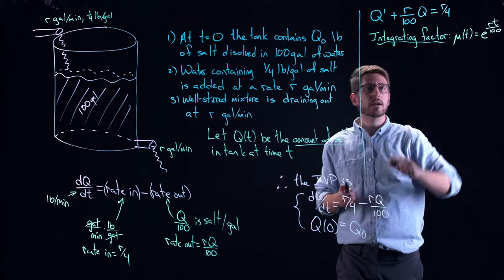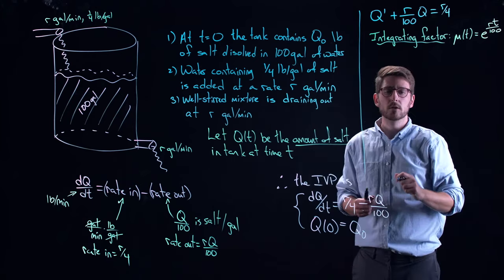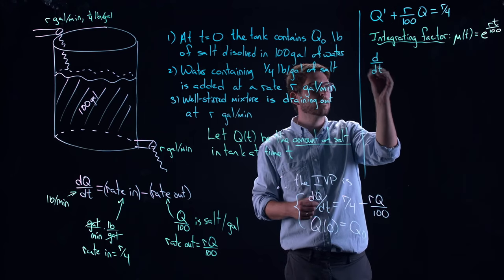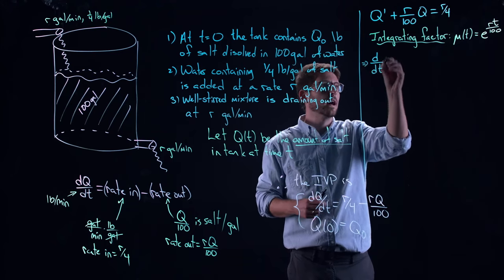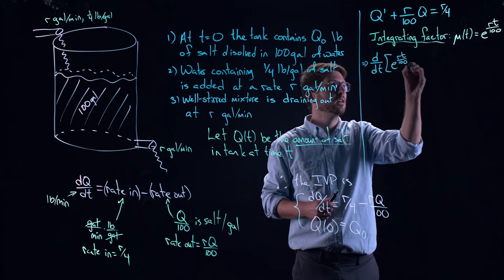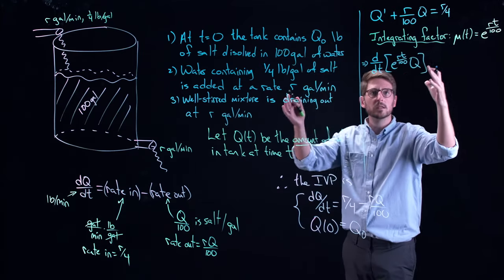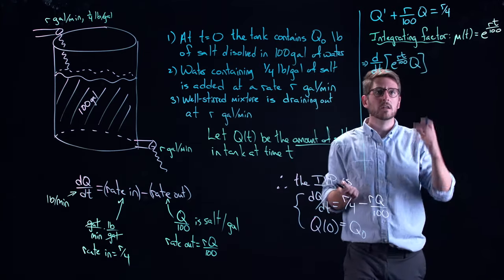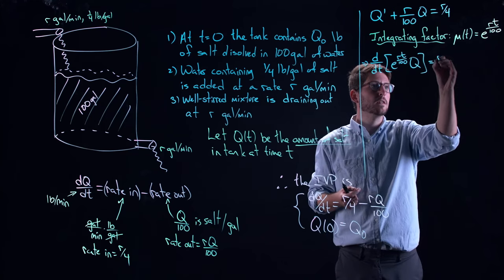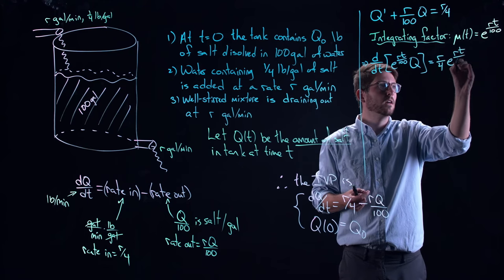So then when you put that integrating factor into your equation, you multiply all three of these terms by mu of T, we know that by the choice of that integrating factor, I get E to the RT over a hundred times Q, all taken with a derivative. Remember that was the whole purpose of an integrating factor. The goal is to undo a product rule. This leaves me with R over four E to the RT over a hundred.